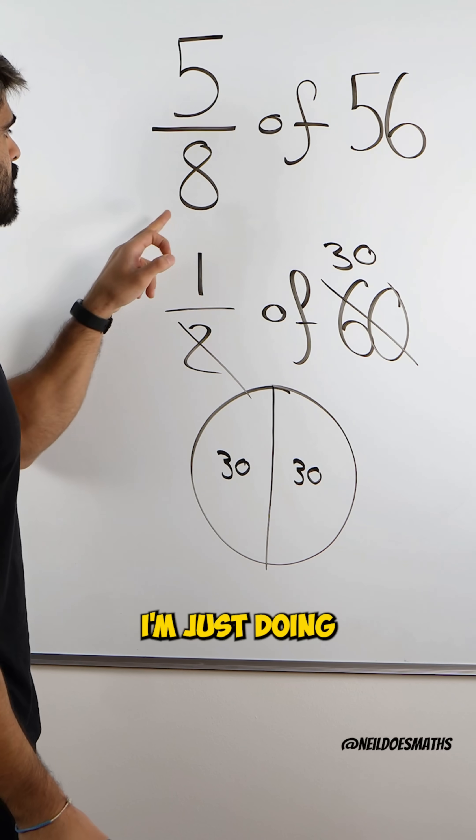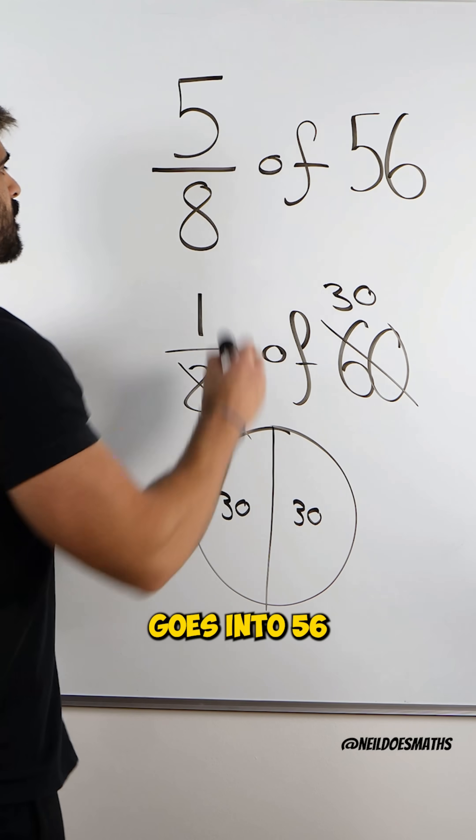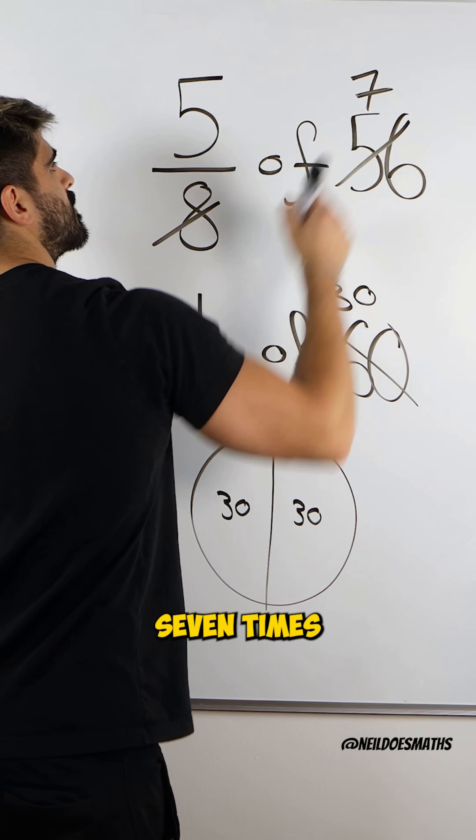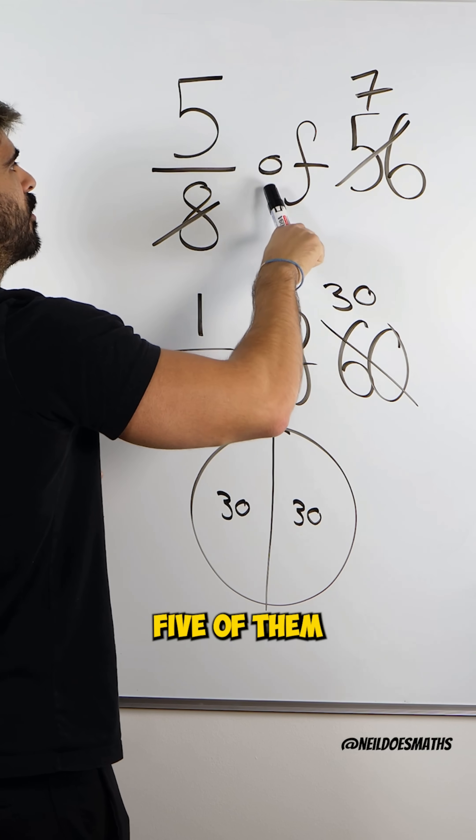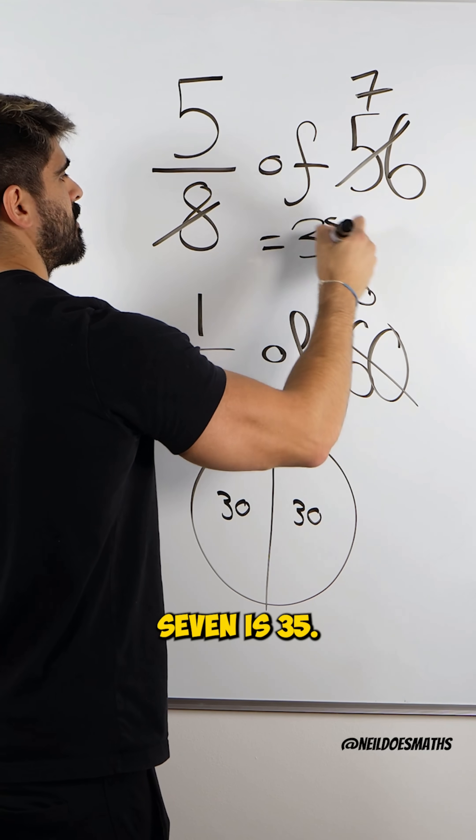So in going to this, I'm just doing the denominator into the numerator. 8 goes into 56 7 times, and then we want 5 of them. 5 of 7 is 35.